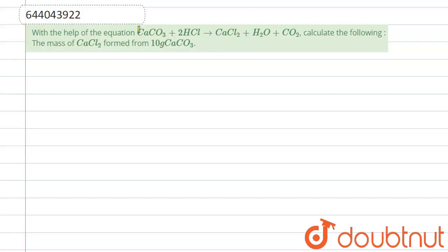Hello everyone, so the question we have is with the help of equation CaCO3 plus 2HCl, this gives CaCl2 plus H2O plus CO2. Calculate the following: the mass of CaCl2 formed from 10 gram of CaCO3.